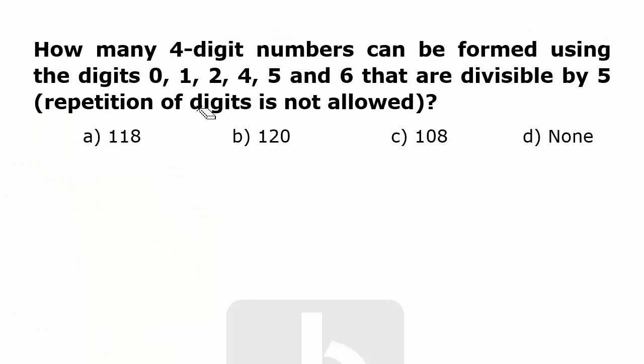Hello students, this is Pawan Jayaswal. Now we are going to see a question from permutation and combination. How many four-digit numbers can be formed using the digits 0, 1, 2, 4, 5, and 6 which are divisible by 5, provided a repetition of the digits is not allowed?